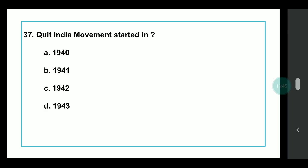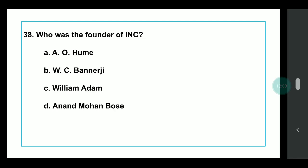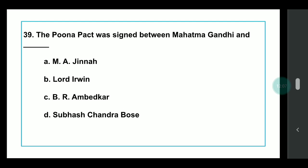Q34: When did the Quit India Movement start? Answer: 1942. We already discussed that the INC President at that time was Abul Kalam Azad — remember all these small connected details for your exam. Q35: Who was the founder of the Indian National Congress? Answer: A.O. Hume. Q36: The Poona Pact was signed between Mahatma Gandhi and which person? Answer: B.R. Ambedkar, in Yerawada Jail, Pune.